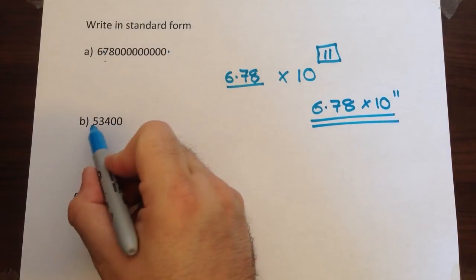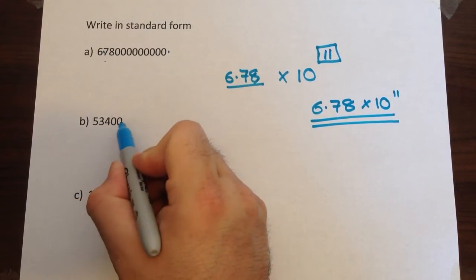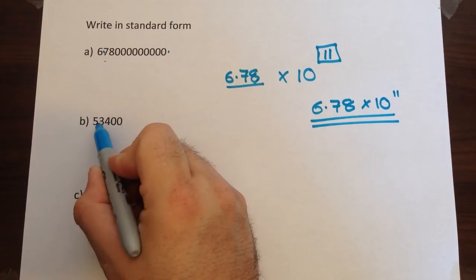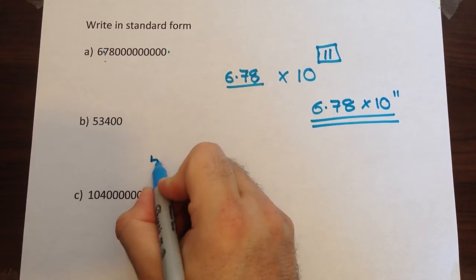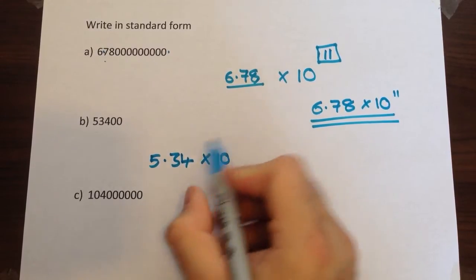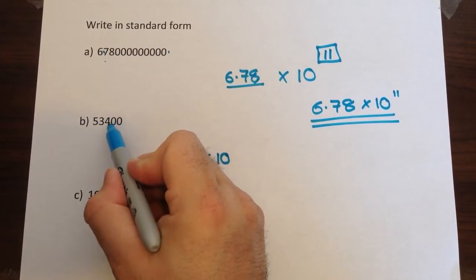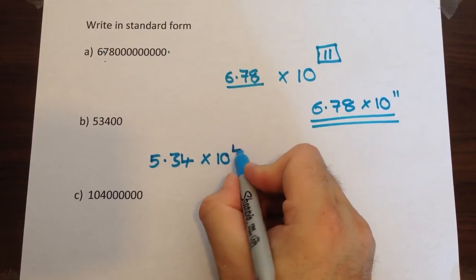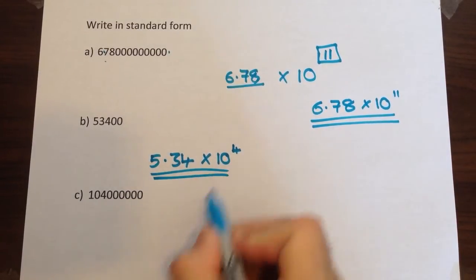So let's use the same method for this one. First of all we've got to make a number less than 10 so we would move the decimal point in between the 5 and the 3. So we would have 5.34 times 10 and how far did we move it? One, two, three, four places. So that would be your answer for the second one.